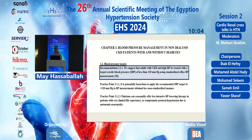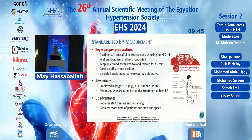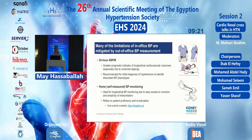The KDIGO 2021 guidelines now recommend lowering blood pressure to less than 120 mmHg using standardized office blood pressure measurement. However, less intensive lowering is advised in patients with very limited life expectancy or symptomatic postural hypotension due to autonomic neuropathy. Standardized measurement requires abstinence from coffee, exercise, and smoking for over 30 minutes, feet on the floor, arms and back supported, five minutes of quiet rest, and correct equipment.